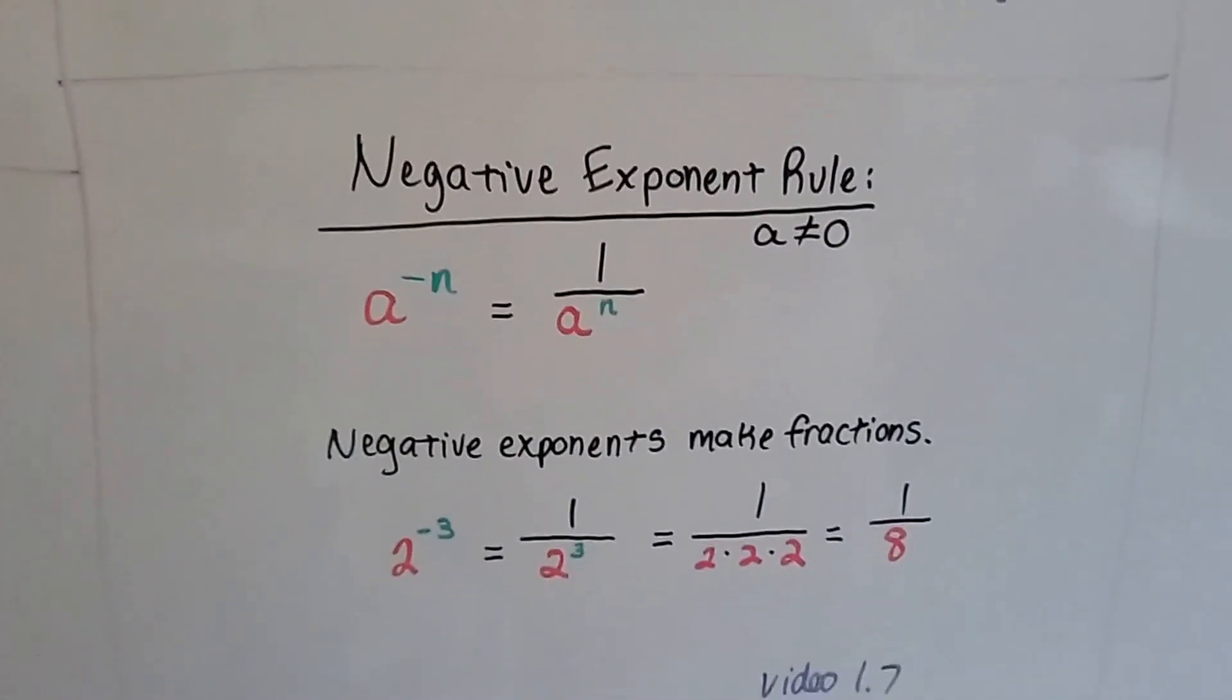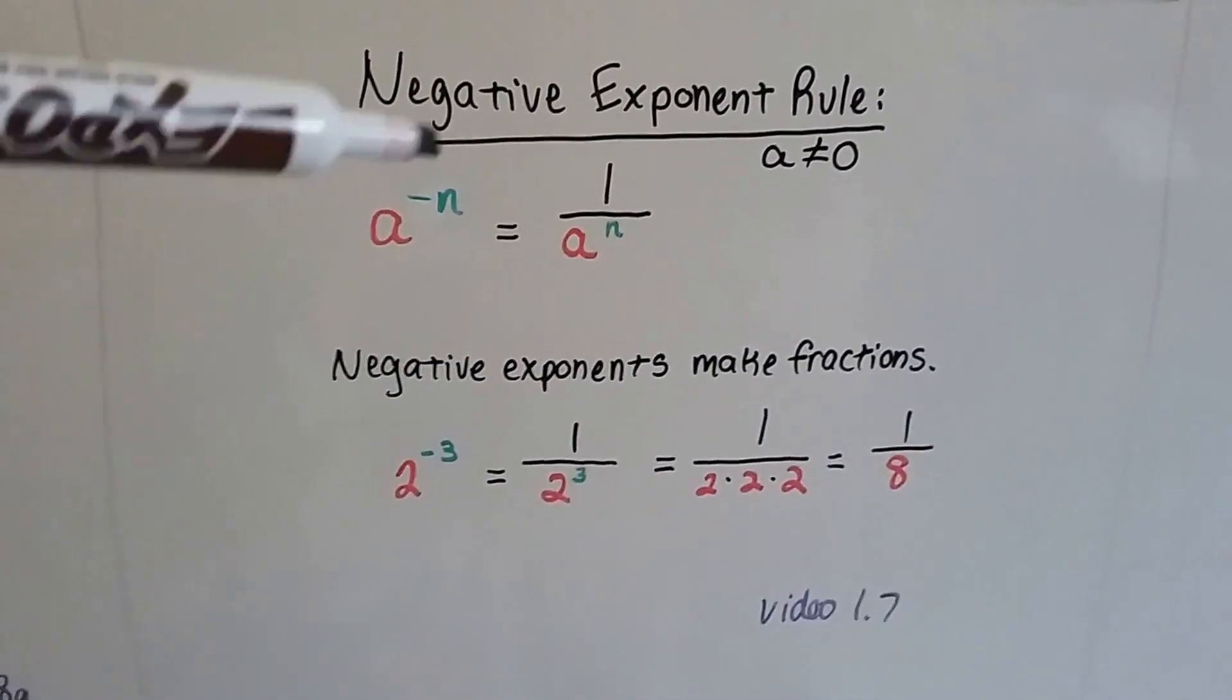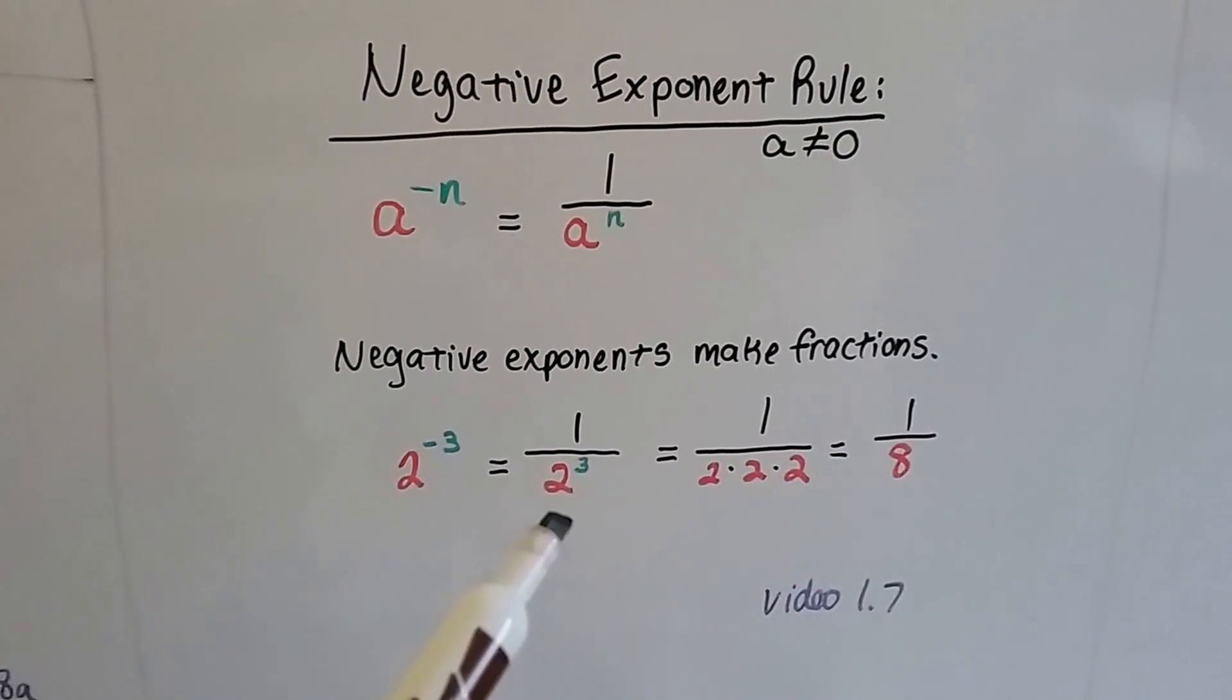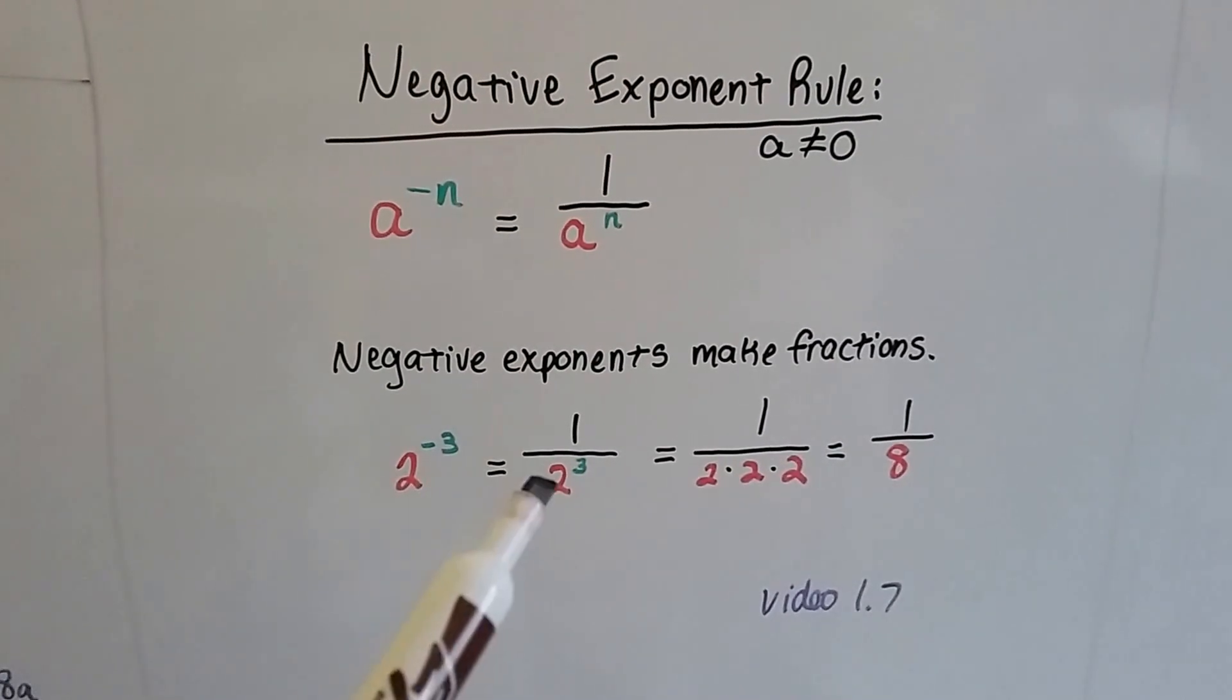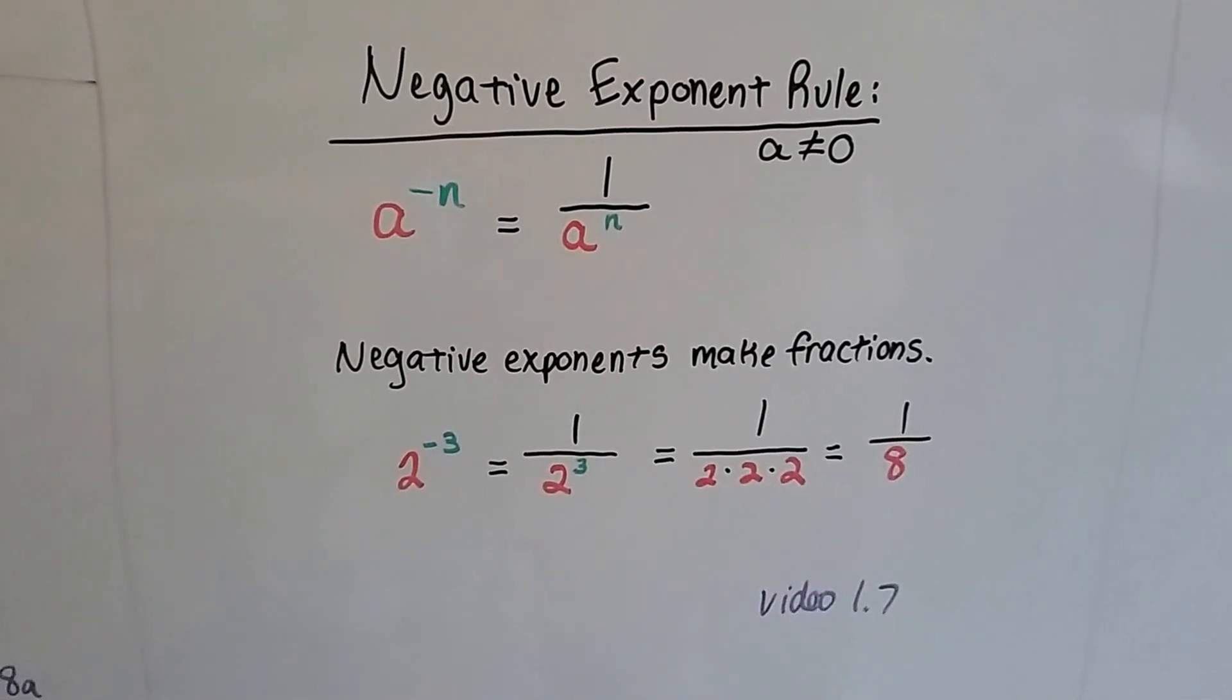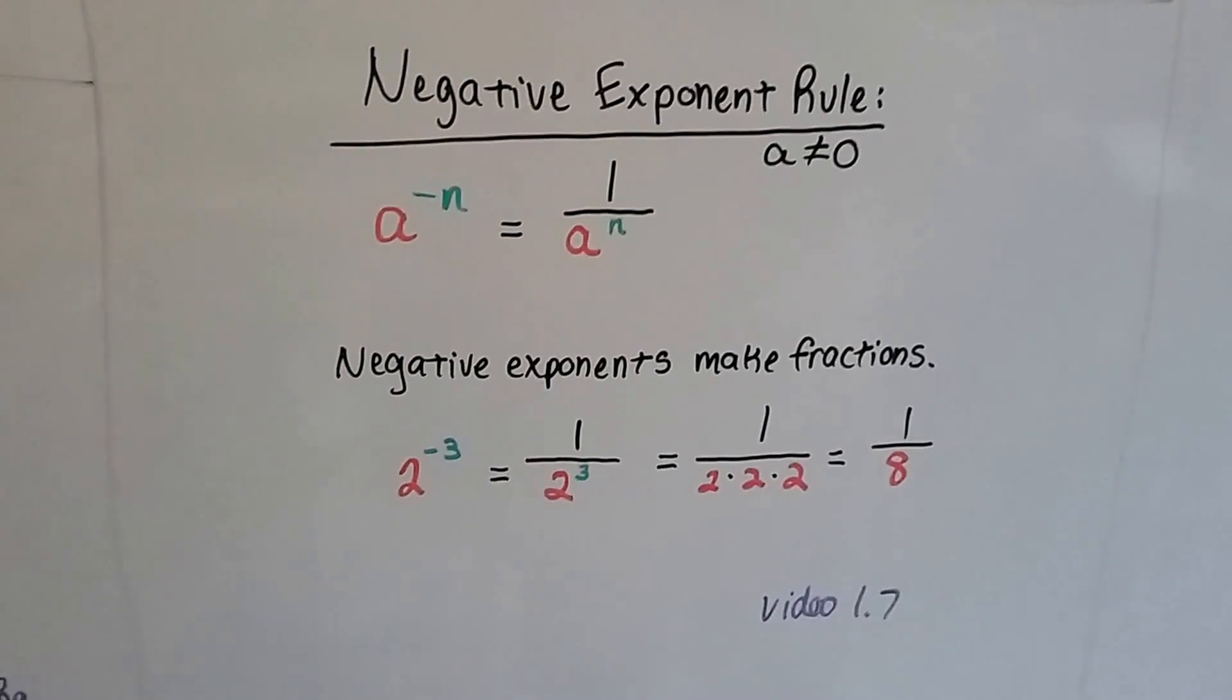The negative exponent rule says that when we have a negative exponent, it makes a fraction. 2 to the negative third is a fraction of 1 over 2 to the third power, which means 1 over 2 times 2 times 2, which means 1 eighth. That was in video 1.7.